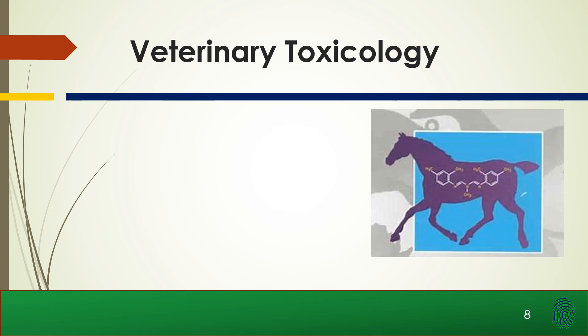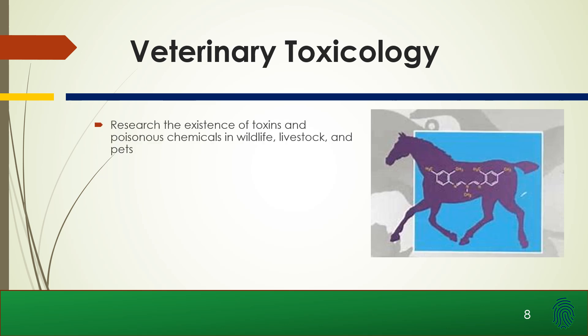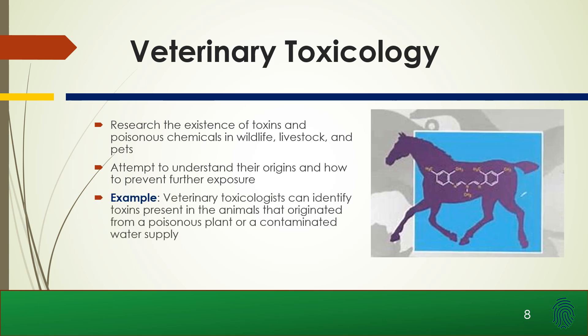Veterinary toxicology researches the existence of toxins and poisonous chemicals in wildlife, livestock, and pets, and attempts to understand their origins and how to prevent further exposure. For example, veterinary toxicologists can identify toxins present in animals that originated from poisonous plants or a contaminated water supply.